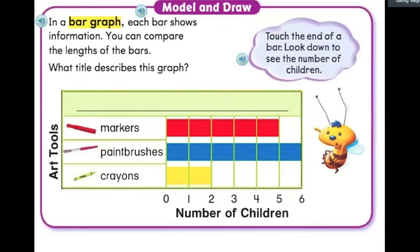Now, we are going to use a bar graph and analyze the data to see what it's telling us. So, in a bar graph, we know that each bar shows information. What is the other word that means information? Tell a family member if you remember. That's right. It's data. You can compare the lengths of the bars to analyze the data.